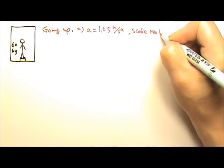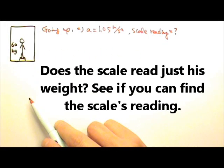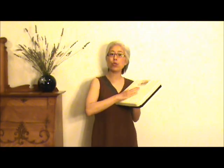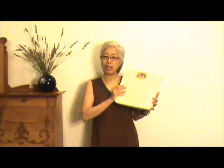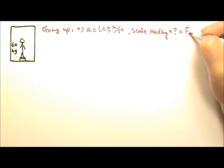We want to find the scale reading. Does the scale read just his weight? Not really. This bathroom scale reads how hard I push on it — the force between these two contact surfaces, how hard they push on each other. That force is the normal force. So a scale like this reads normal force, not weight. So if we are looking for the scale's reading, we are looking for the normal force.